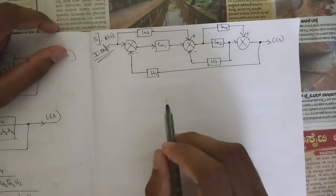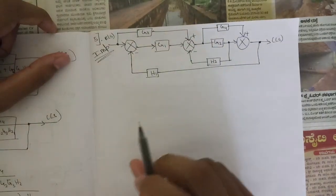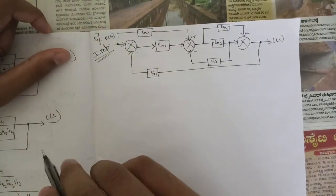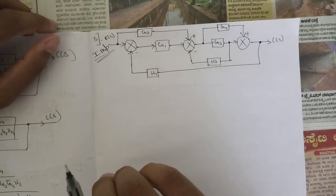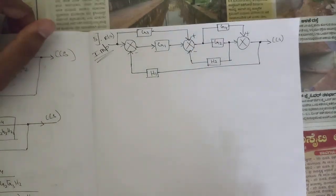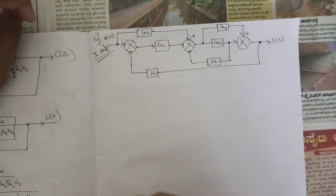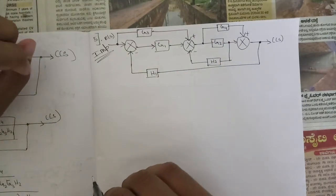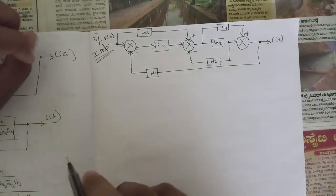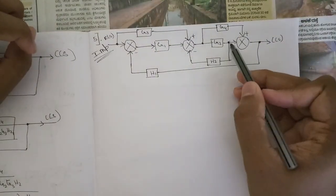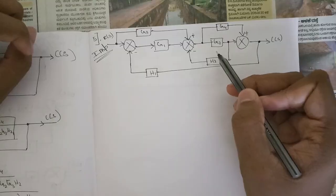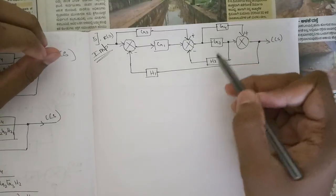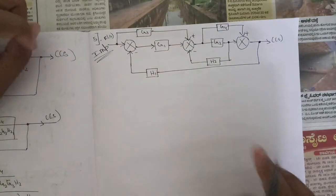Now let's solve the problem. In the first step we can see a trouble: we have a takeoff point behind the summing point. In this case we need to use critical rules which I haven't told you yet — I'll cover those in upcoming sessions. Without those, we can solve this problem using the first rule by changing the position of the summing points. What we need to do first is shift this takeoff point behind the block, multiplying by G2, so it becomes H2·G2. These two would then be in parallel, and after reducing that we get one minor loop.